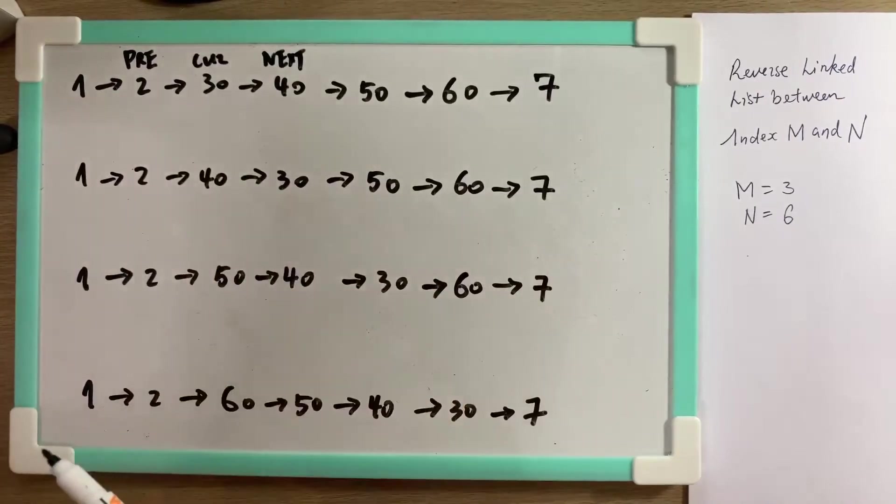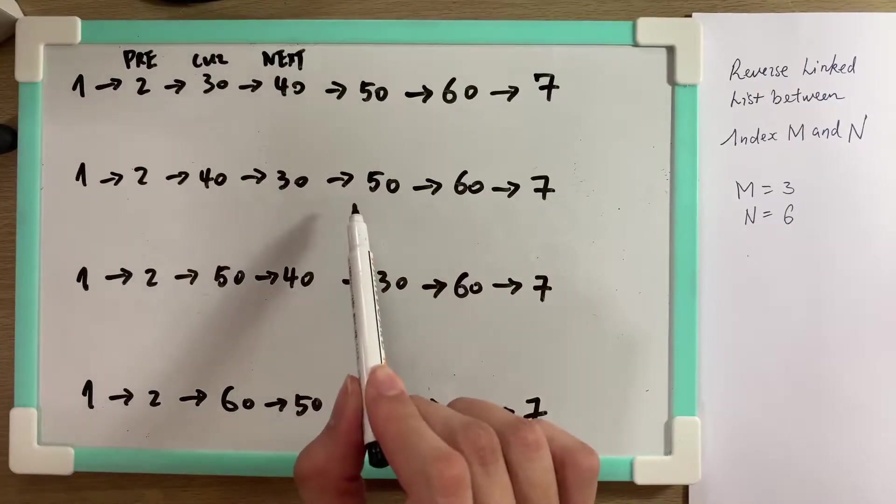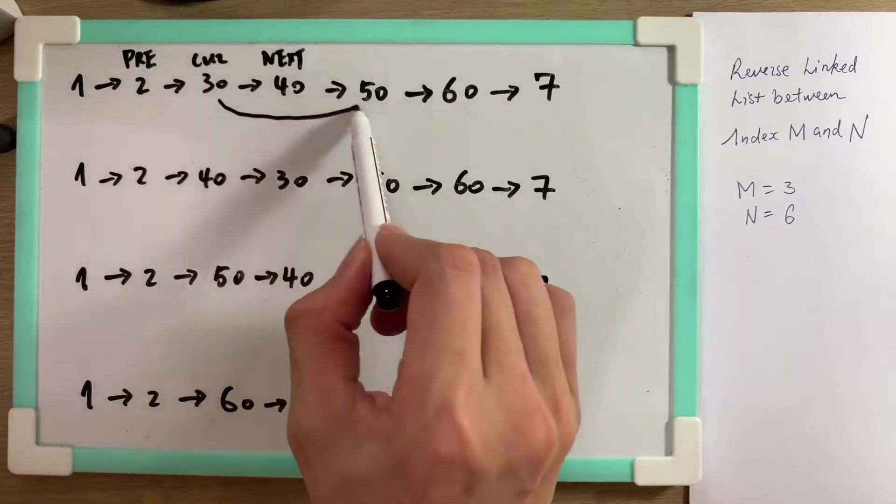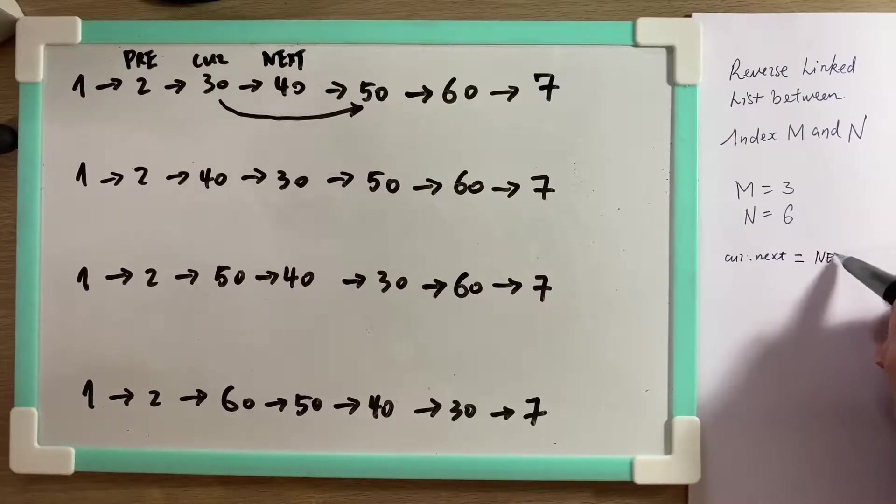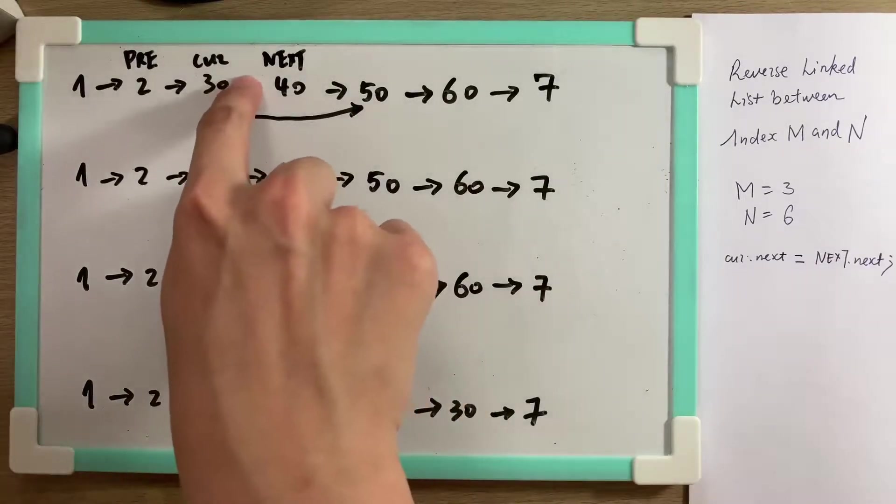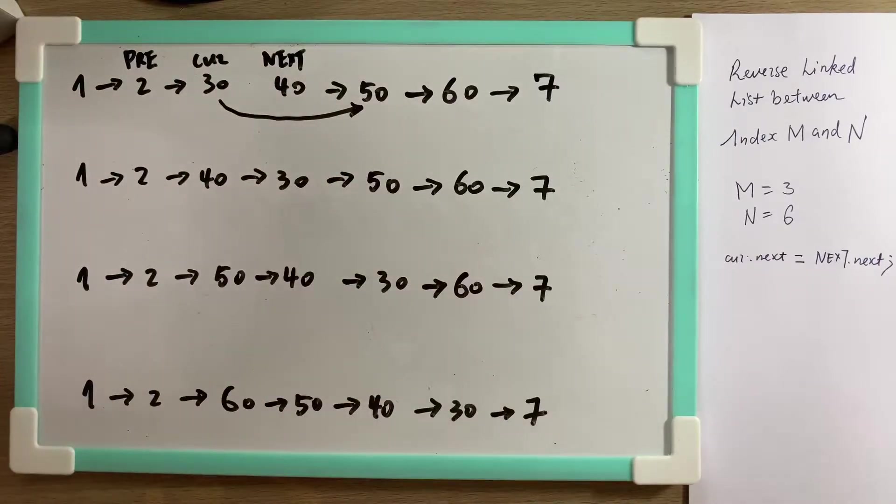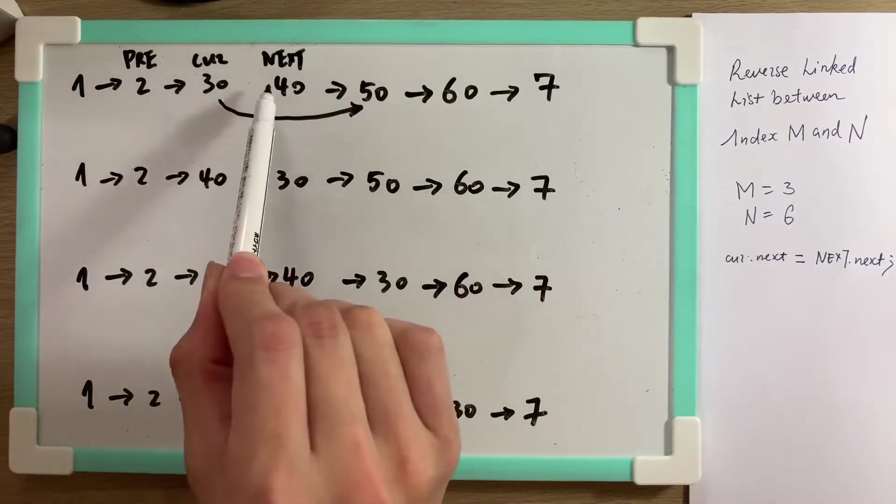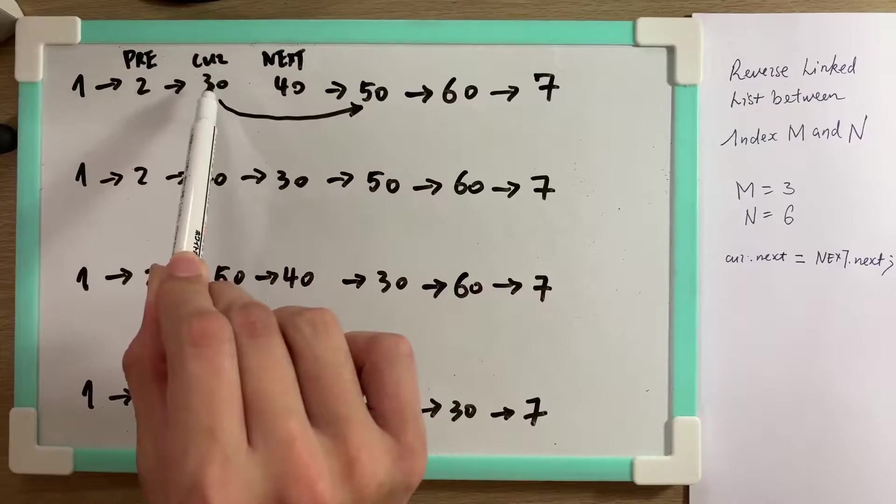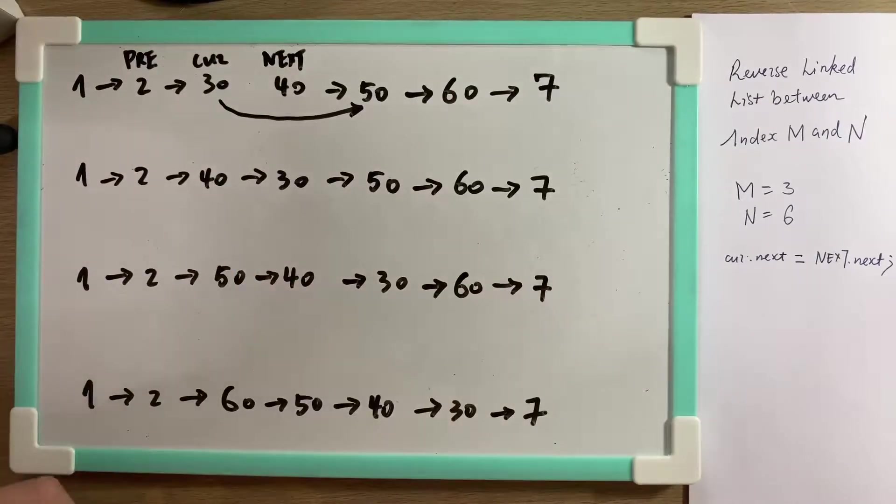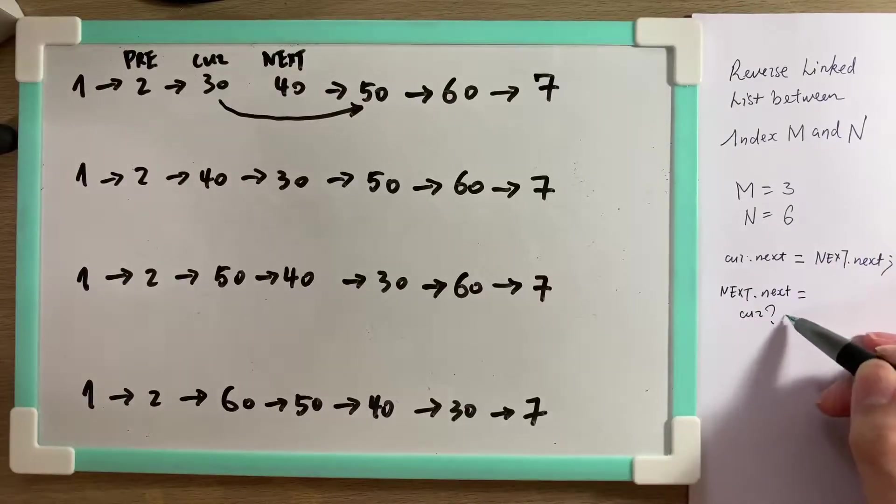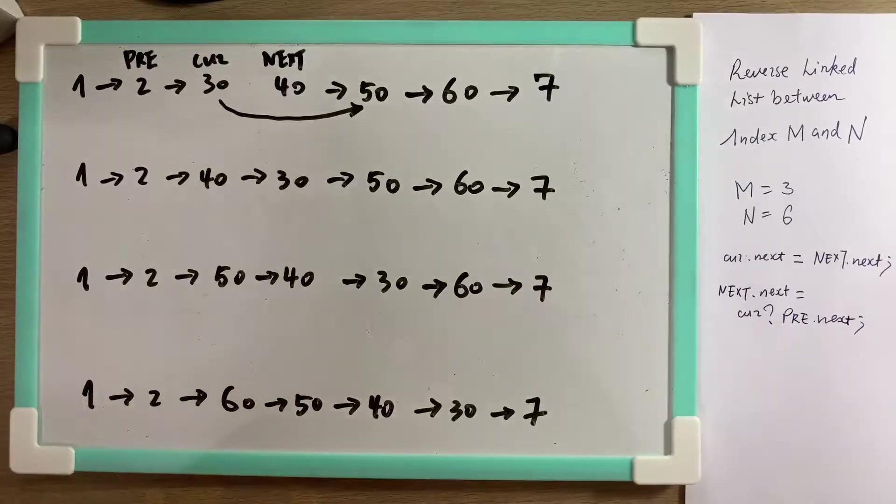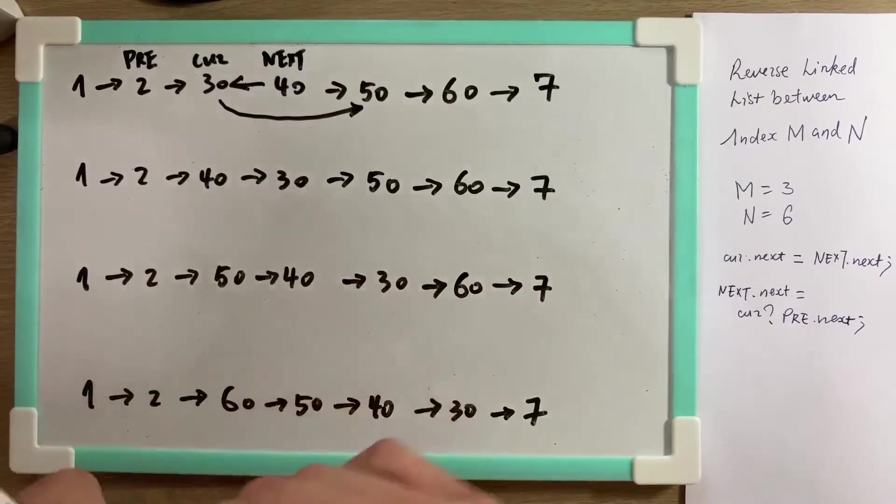How do we go from here to here? We see 30 is pointed to 50, so our curve should point to the next of next. So curve's next is next.next. So this arrow is gone. What else? 40 should point to 30, so next should point to—should we point to curve or shall we point to pre.next? We don't know yet, so let's just reserve the option. Next.next is either curve or pre.next. We don't know yet. So 40 point here, this arrow is gone.